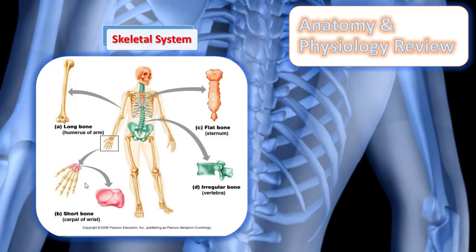Short bones, like the phalanges, are small and bear little or no weight at all. Flat bones, such as the sternum and the scapula, protect vital organs and often contain blood-forming cells. Bones that have unique shapes in the body are classified as irregular bones — those are the ones with their own unique shape.